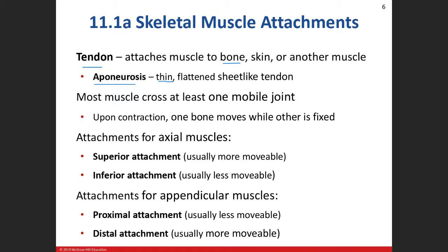When we talk about attachment sites for axial muscles, we use a superior attachment and an inferior attachment. Origin and insertion are older equivalent terms — the origin is the less movable portion, and the insertion is the more movable area. For axial muscles, the superior attachment is the more movable area. For appendicular or limb muscles, the proximal attachment site is the less movable, and the distal is the more movable — what we used to call the insertion.